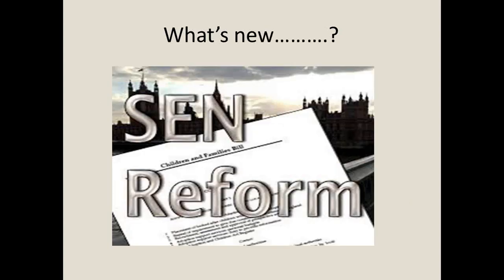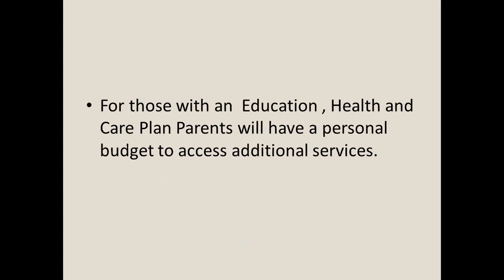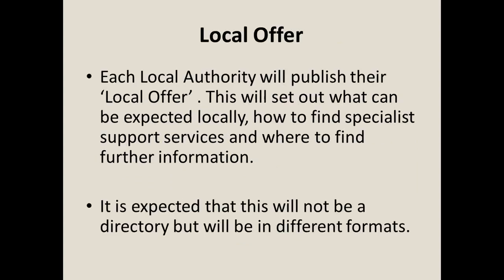There's a huge amount of SEN reform going on — things will change dramatically over the next year or so. At the British Dyslexia Association, we're quite concerned by some of these reforms. Local authorities will identify all children and young people with a special educational need. They're going to do away with School Action and School Action Plus — that was the opportunity for some of these children to be monitored, and without it we're concerned there won't be that monitoring. For the most severe children, they will have an Education, Health and Care plan instead of a statement.